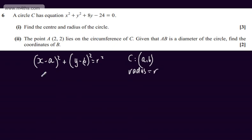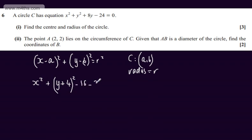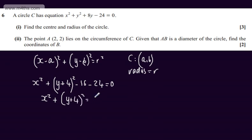So completing the square, we're going to have x squared plus y plus half the coefficient, which is 4. We square the bracket, we subtract away the 16, and subtract away the existing 24, setting that equal to 0. Then we can rewrite this as x squared plus y plus 4, all squared, is equal to 40.